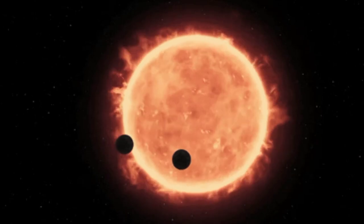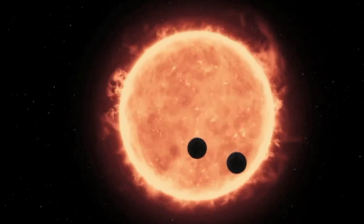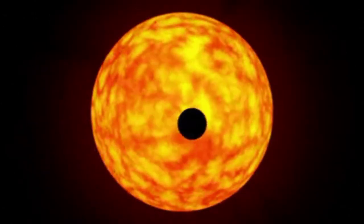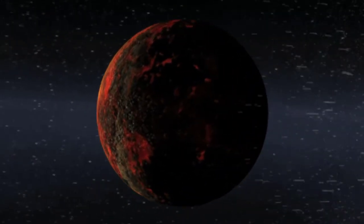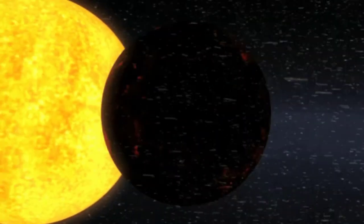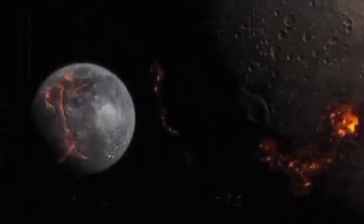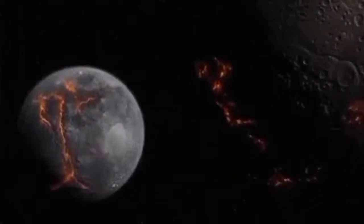Third planet from the sun, the Earth, was going to be our home planet. But it was largely molten at that time. It was red-hot beneath the crust. But during this course of collision and evolution, something happened.